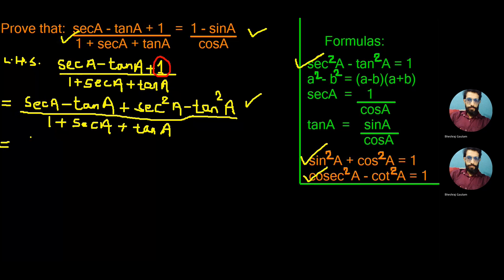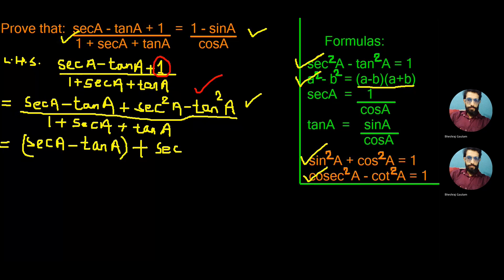Let's continue the step. We write sec a minus tan a in one bracket, and now sec²a minus tan²a can be expressed using the formula a² minus b² equals a minus b into a plus b. So doing the same here, we get sec a minus tan a in one bracket and sec a plus tan a in the next bracket, all in the numerator.